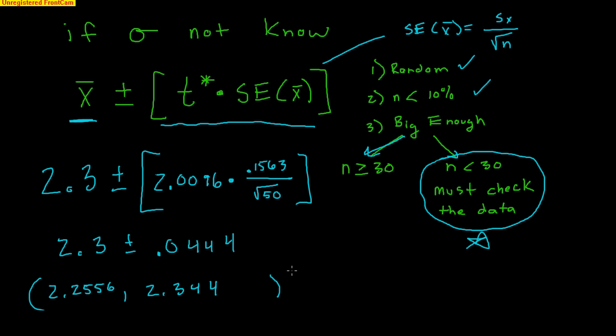Quick recap: when solving a problem with means, first ask yourself — do you know sigma, the population standard deviation? If yes, the uncommon case, you can use Z*. But typically you don't know sigma; you only know the sample standard deviation S. That extra variation means you must use the T model. The T model works just like the Z model — use invT to find T*. Watch your conditions, especially the big enough condition: greater than 30 means CLT applies; less than 30 requires checking for approximate normality.